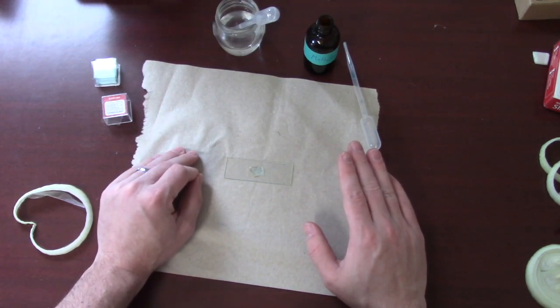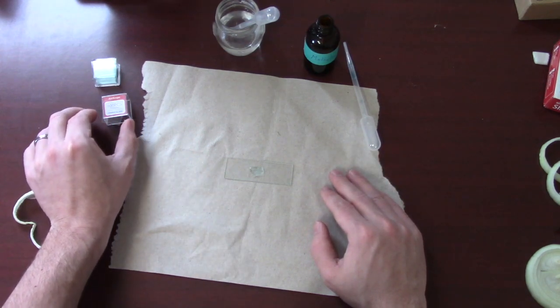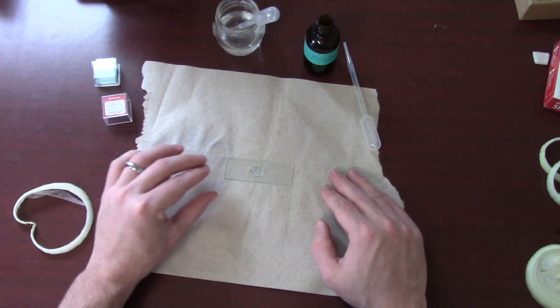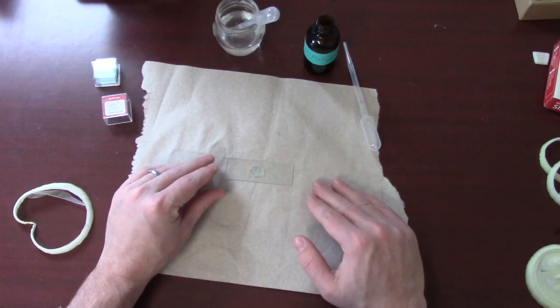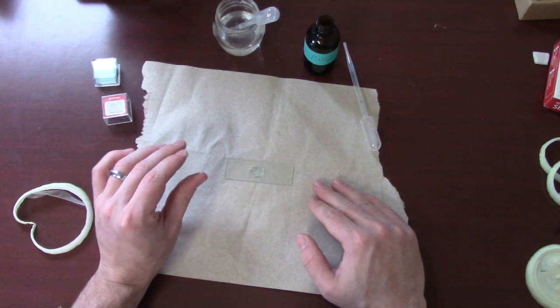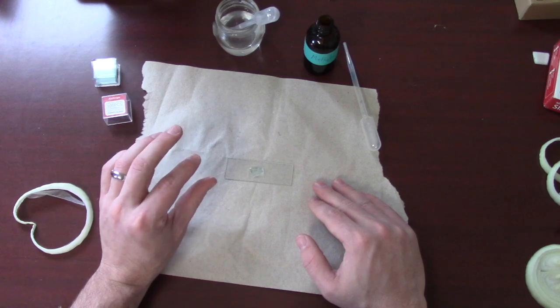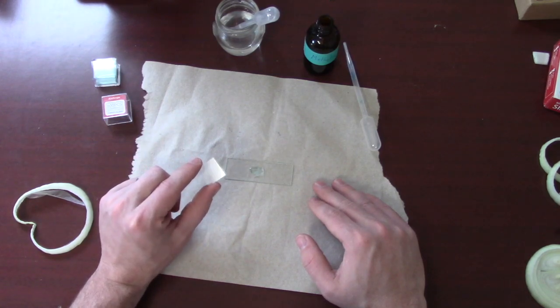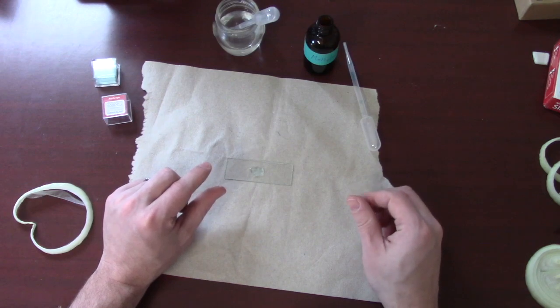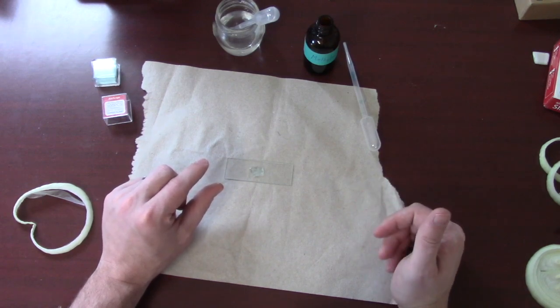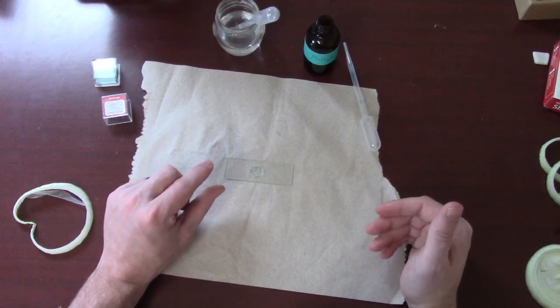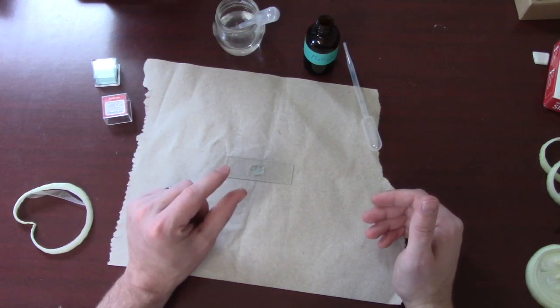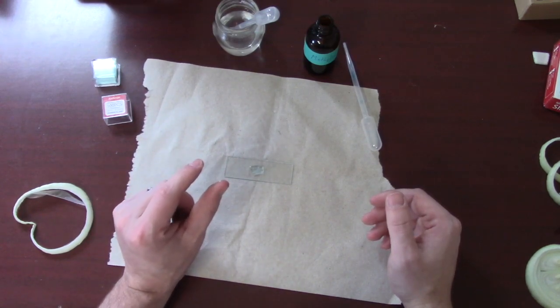Alright, that should be about ready. The next step is to add our cover slip. So, just like the microscope slide, we want to make sure our cover slip is nice and clean. And do you notice how I'm holding it by the edges? If you hold it by the top and bottom, you're going to get thumb prints on it. And the cover slip will end up dirty and it will be harder to see through. So, always hold microscope slides and cover slips by their edges.